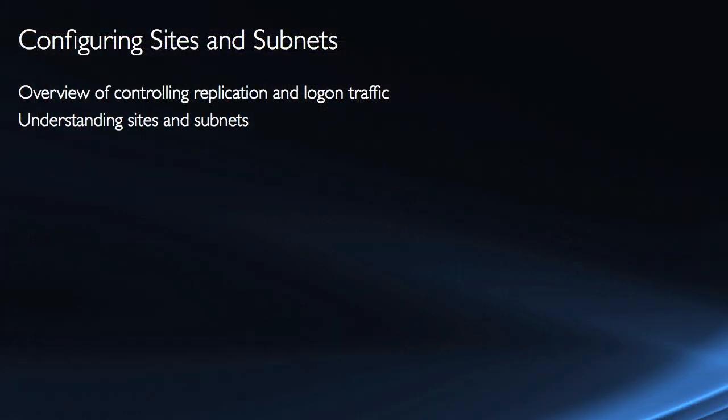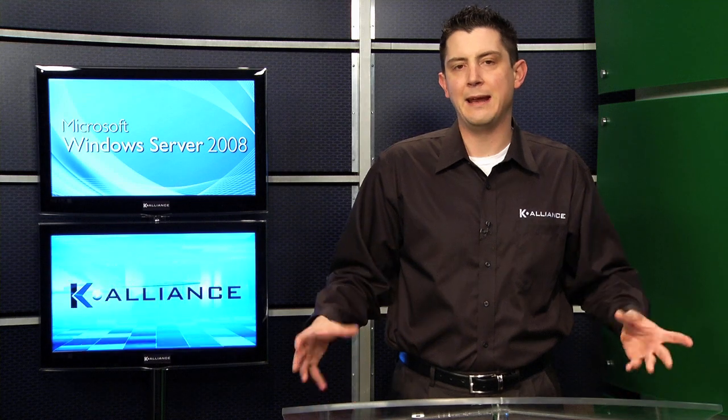We need to get a clear understanding as to what sites and subnets are, because in reality, though we're dealing with the physical structure, these are logical objects that represent the physical. The site is a logical object in Active Directory that represents a physical location. The subnet is a logical object that represents the physical network segment or subnet. We need a clear understanding of how these are used and what they're used for.